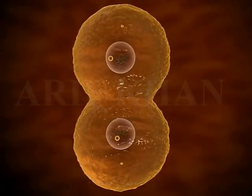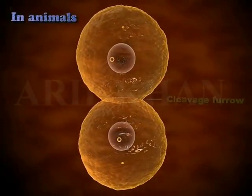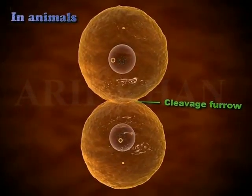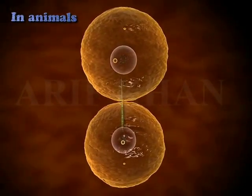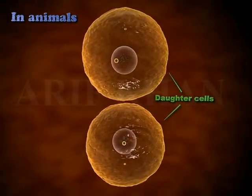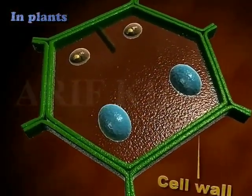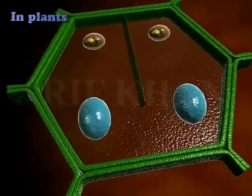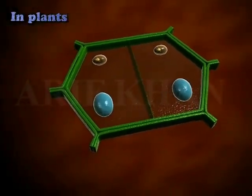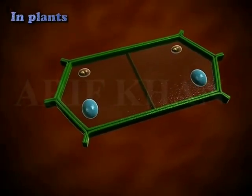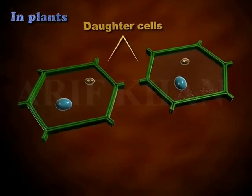Cytokinesis is the partition of the cytoplasm. In animals, a cleavage furrow appears in the plasma membrane, which deepens and divides the cytoplasm into two daughter cells, each containing a nucleus. In plants, new cell wall formation is triggered at the centre of the cell by the formation of a cell plate. The cell plate grows outwards till it meets the existing wall, resulting in two daughter cells.